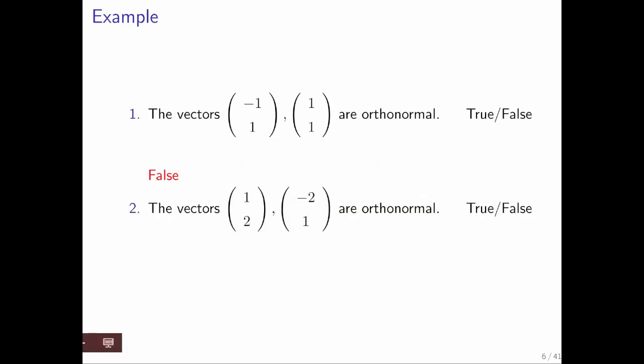Here's another example. Are these vectors orthonormal? Take the inner product of these two vectors, you get 0. But if you take the inner product of either of these vectors with itself, you do not. So the answer is false.